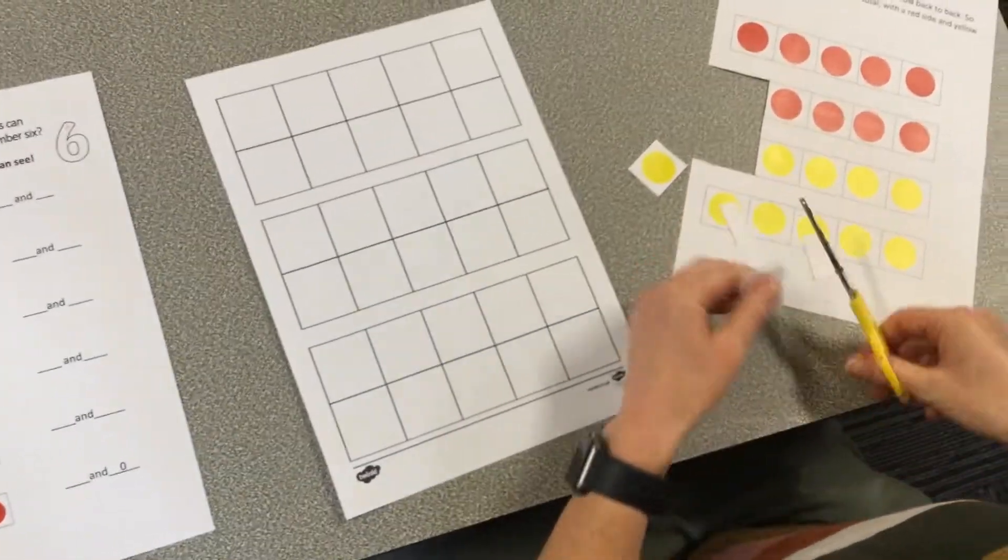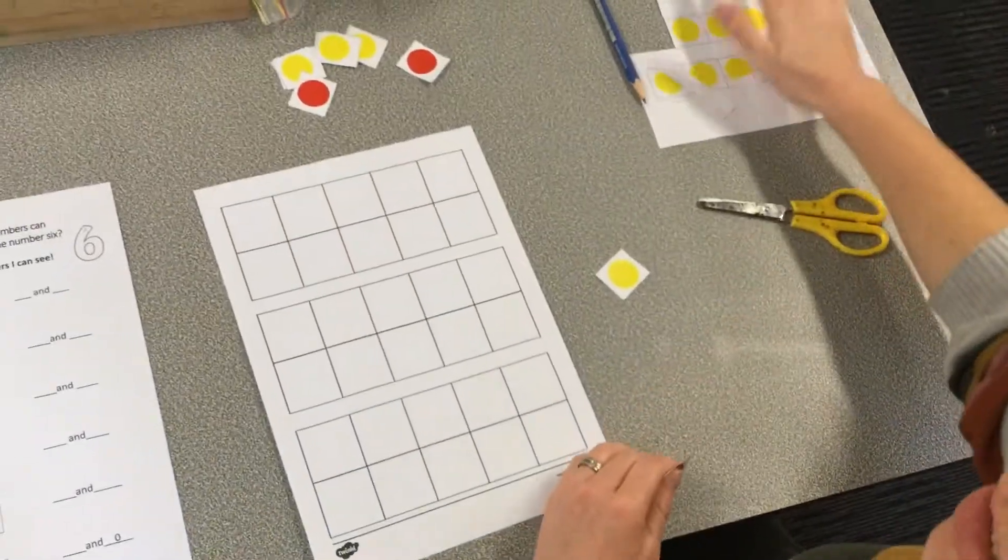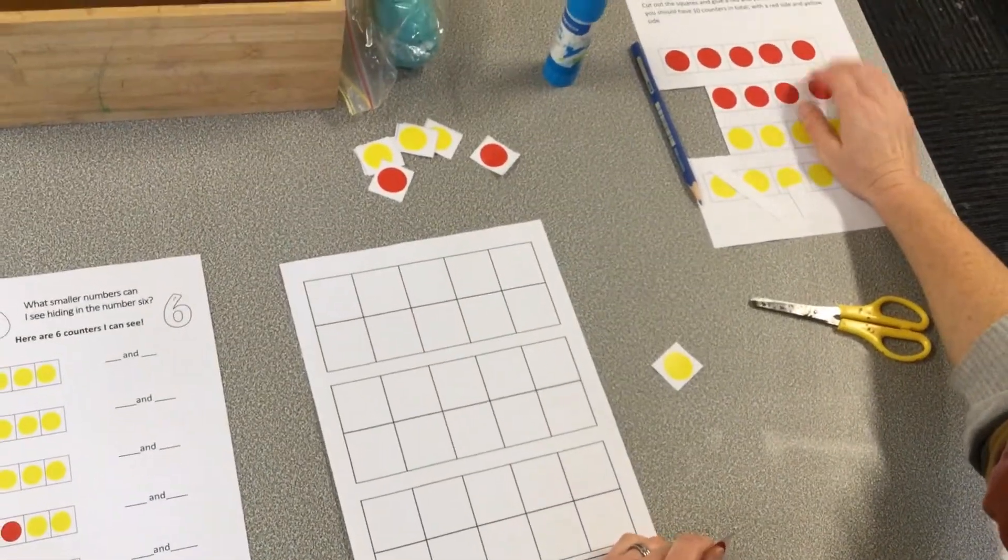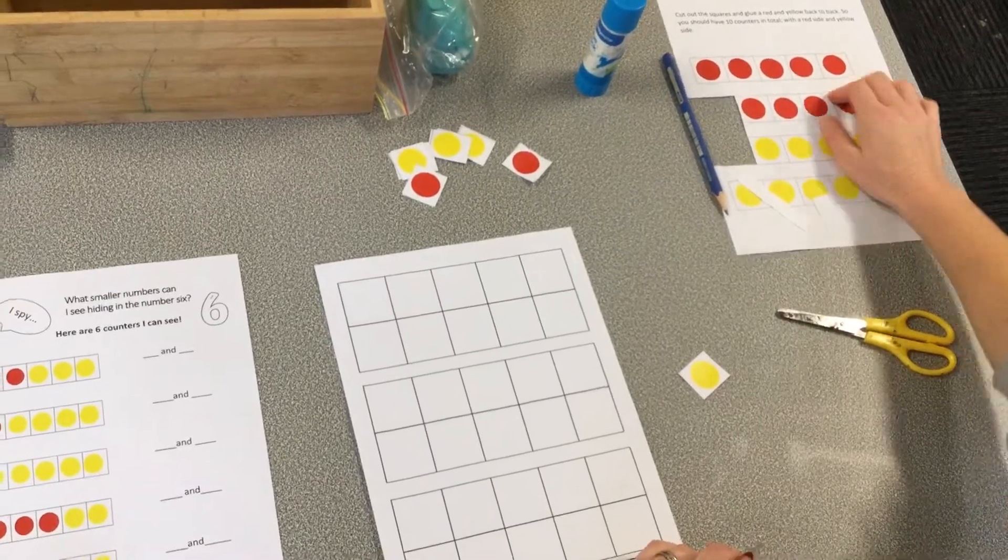And then I'm going to glue these two together. I'll leave that to the side. Now I'm not going to put this in the bin because this will be really helpful for tomorrow when I'm looking at partitioning number seven.